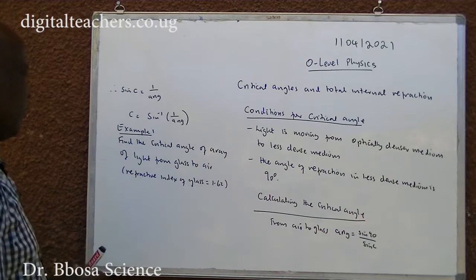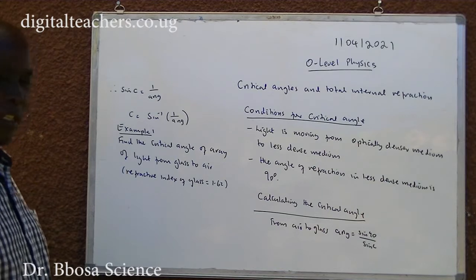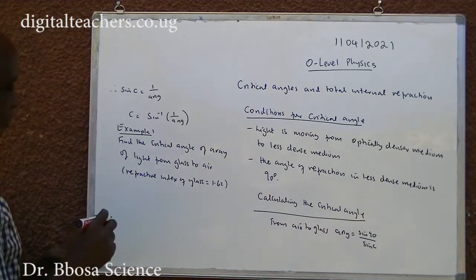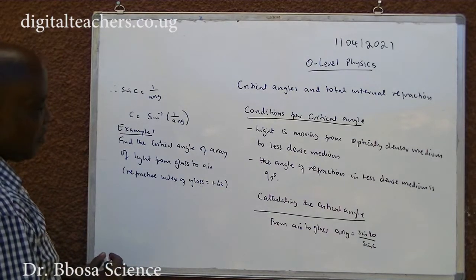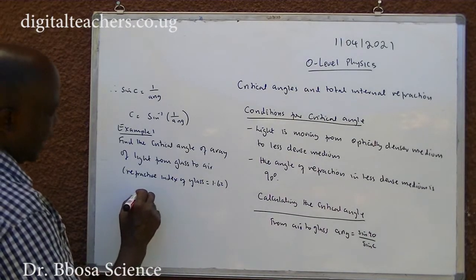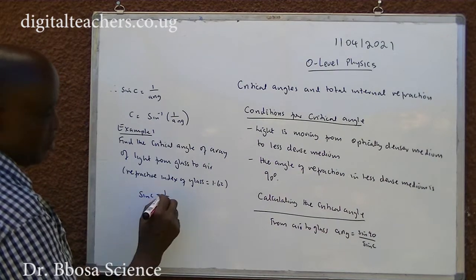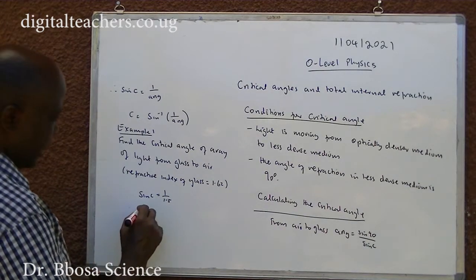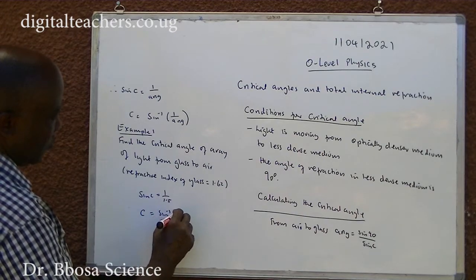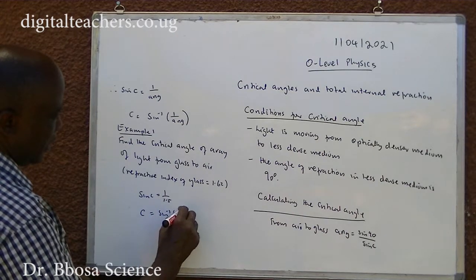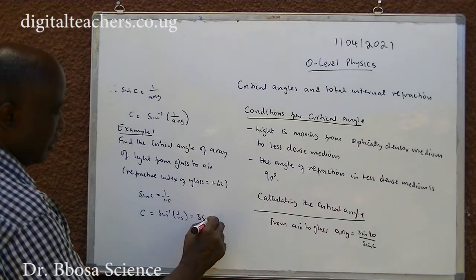Example 1: Find the critical angle for glass to air. The refractive index of glass is 1.62. So sine C equals 1 over 1.5, then C equals sine inverse of 1 over 1.5, which equals 38.1 degrees.